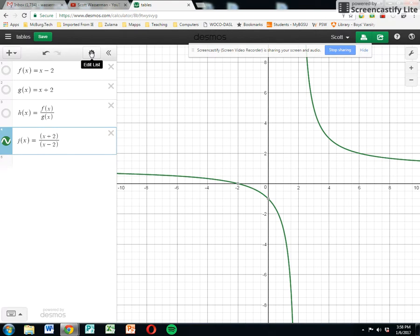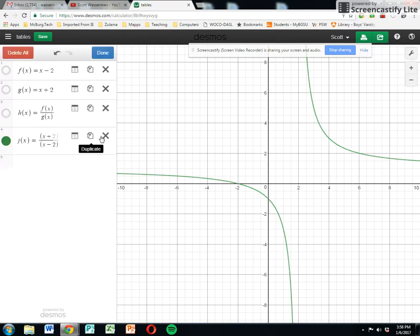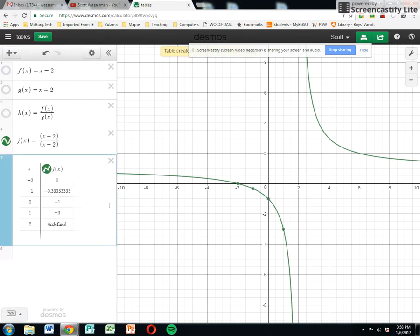If you'll click on the edit list part here, you'll notice that this shows up on all of them. This is duplicate. This is delete. And this one here is convert this to a table. So I'm just going to hit convert this to a table. And you'll see they've picked some default values here.